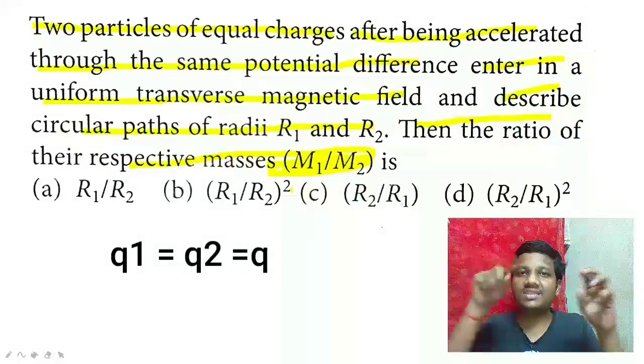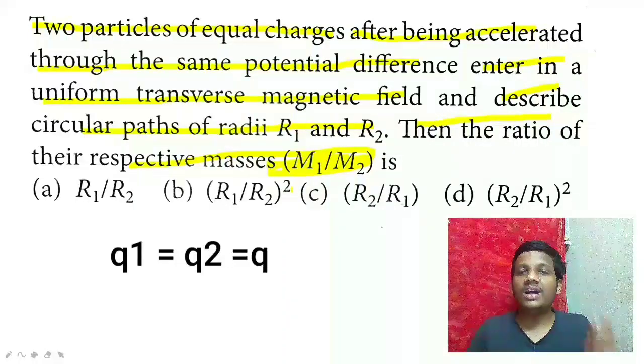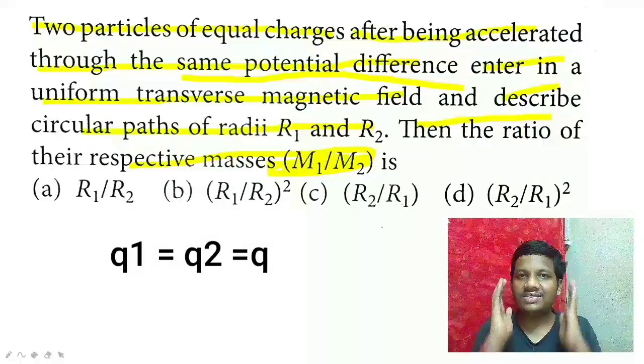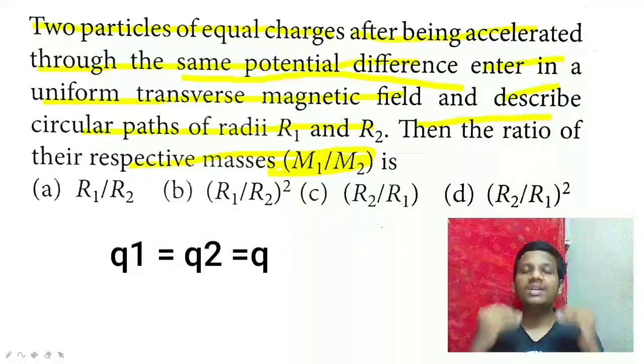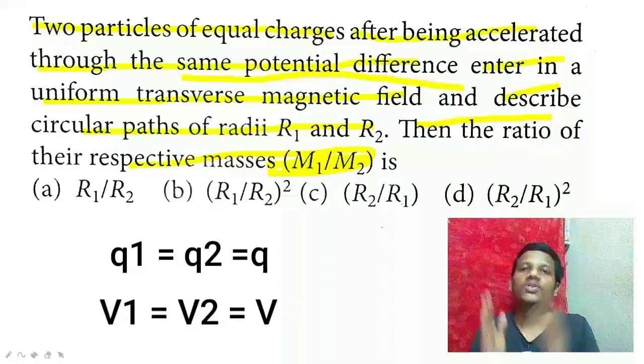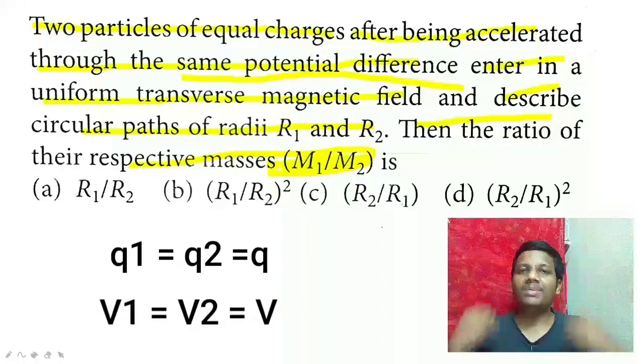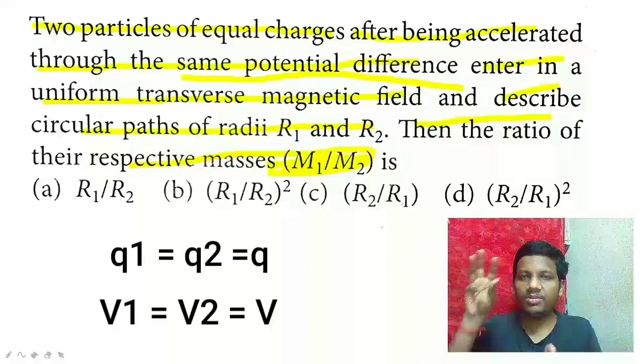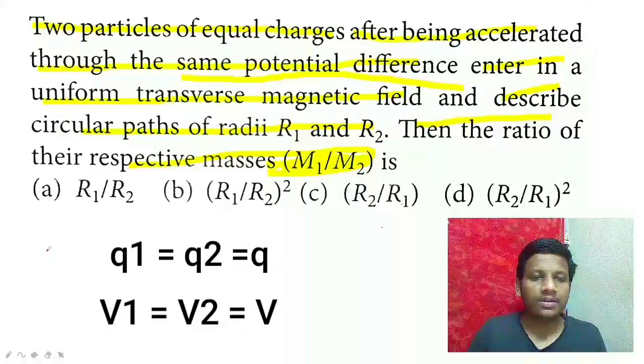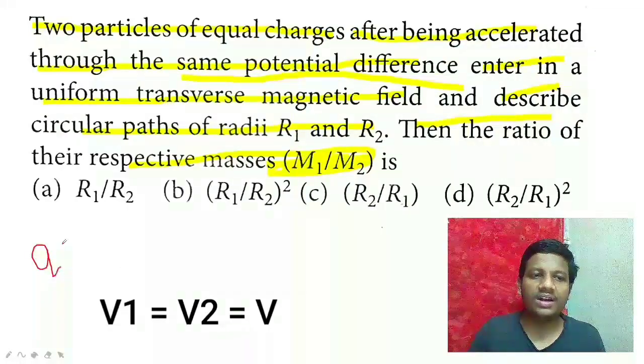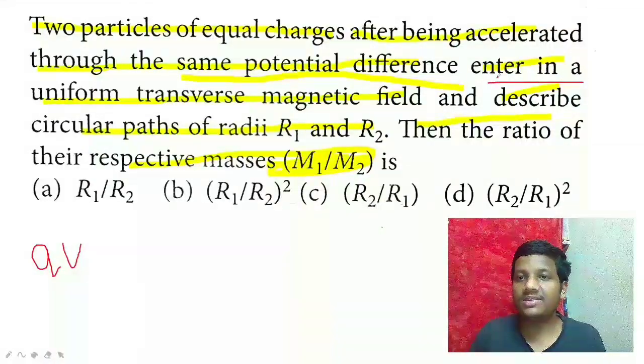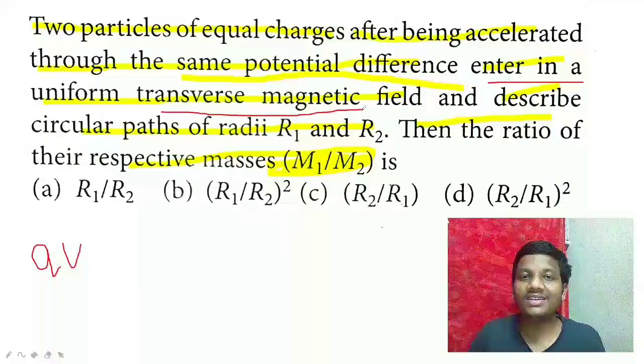After being accelerated through the same potential difference, both have V1 equal to V2. Just like we took the charges as equal, we can take the potential difference as common: V1 equals V2 equals V. So now we have q as common between the two, and the potential difference is also common.